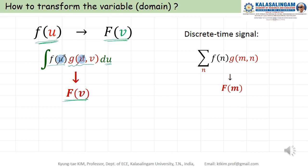Also discrete time case. F of N, and then multiplied by G function of G M N, and then we carry the summation through the variable N. Then N will be removed. Then finally we can get function of M.